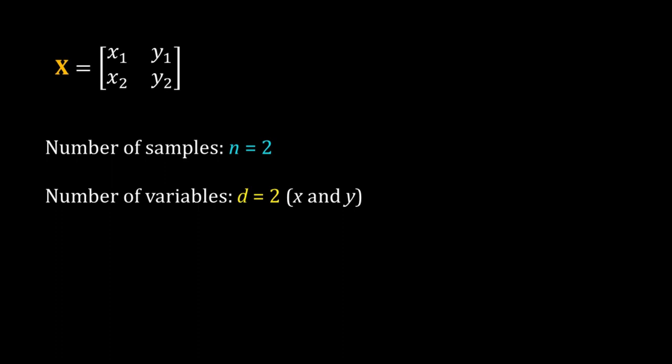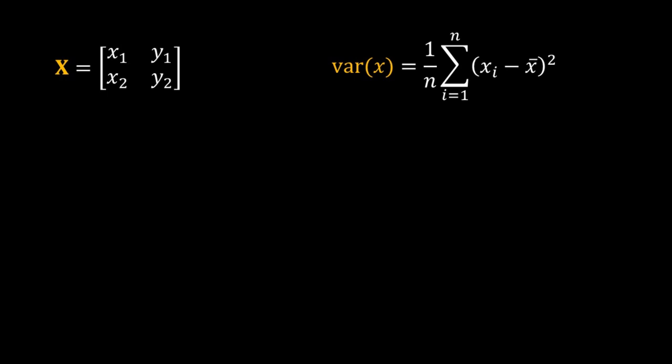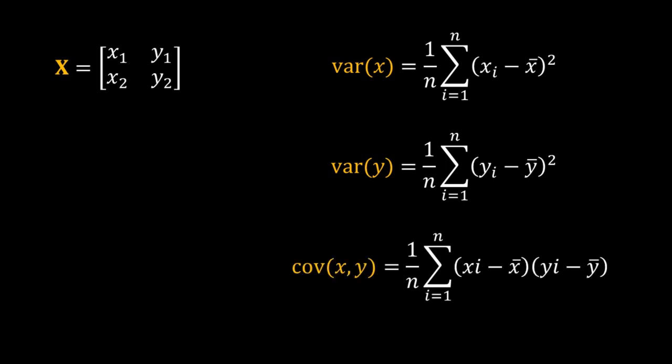Again I will take a simple example. My data set X is 2 by 2. Two variables X and Y and two samples. The variance of X would be 1 by N into summation of XI minus X bar square. We also know the formula for covariance between X and Y. So the covariance between X and Y is equal to 1 by N into the summation of XI minus X bar into YI minus Y bar.